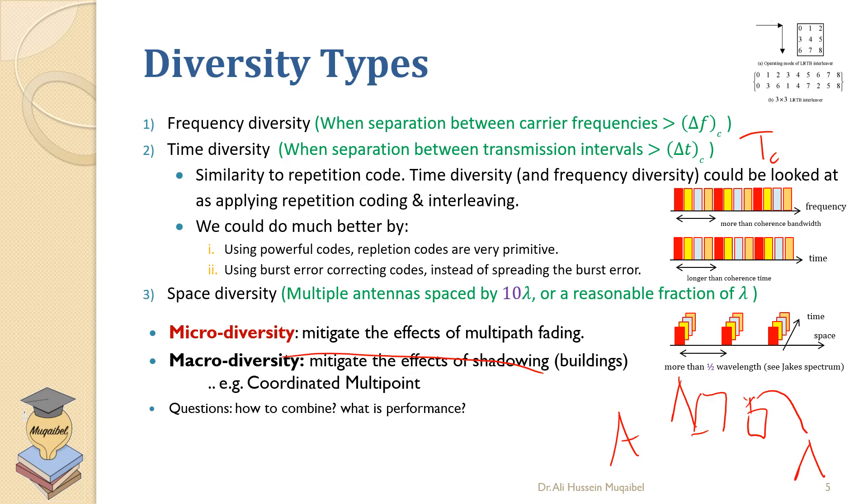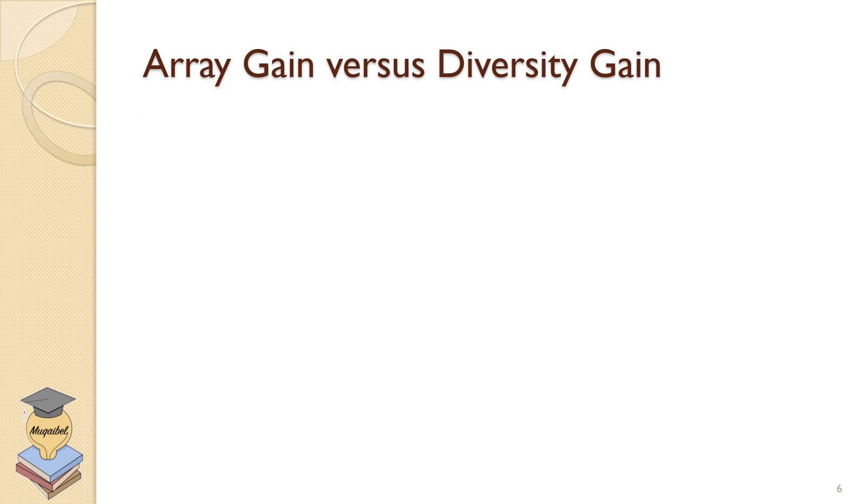Array gain is the signal-to-noise ratio increase in the absence of fading. The fact that you have multiple receptions by itself is going to result in a gain whether you have fading or not. This is called array gain, the gain as a result of going from a single antenna to an array.